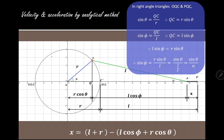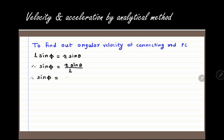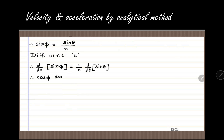Now, using the expression sin phi equals sin theta upon N, we can find the angular velocity and angular acceleration of the connecting rod. Differentiating this equation with respect to t, the derivative of sin phi with respect to t is cos phi times d phi by dt, and the derivative of sin theta with respect to t is cos theta times d theta by dt.